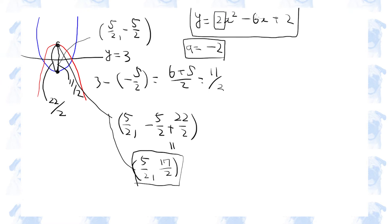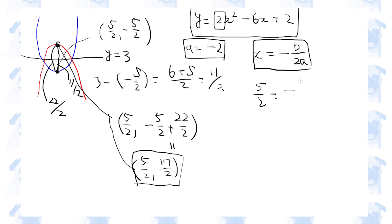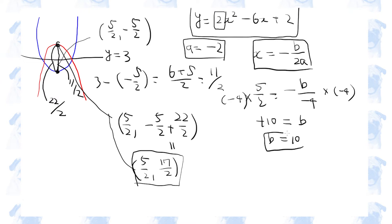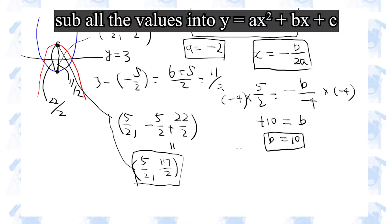To find the coefficient of x, we can use the formula for finding the x-coordinate of the vertex. Since the formula includes constants a and b, and we already know the x-coordinate of the vertex is 5 over 2 and the value of a is minus 2, the coefficient of x is 10. Then we substitute all known values to find the final constant.